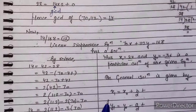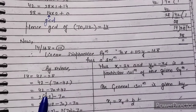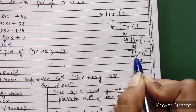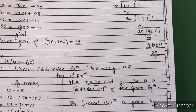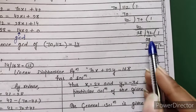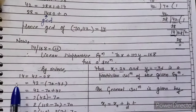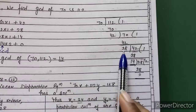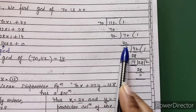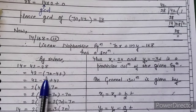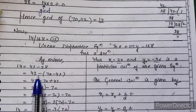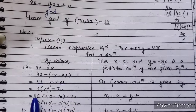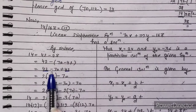Now we use the reverse process, starting from the GCD. We write 14 equals 42 minus 28. Now substituting 28: since 70 equals 42 times 1 plus 28, we have 28 equals 70 minus 42. Substituting: 14 equals 42 minus (70 minus 42) equals 2 times 42 minus 70.